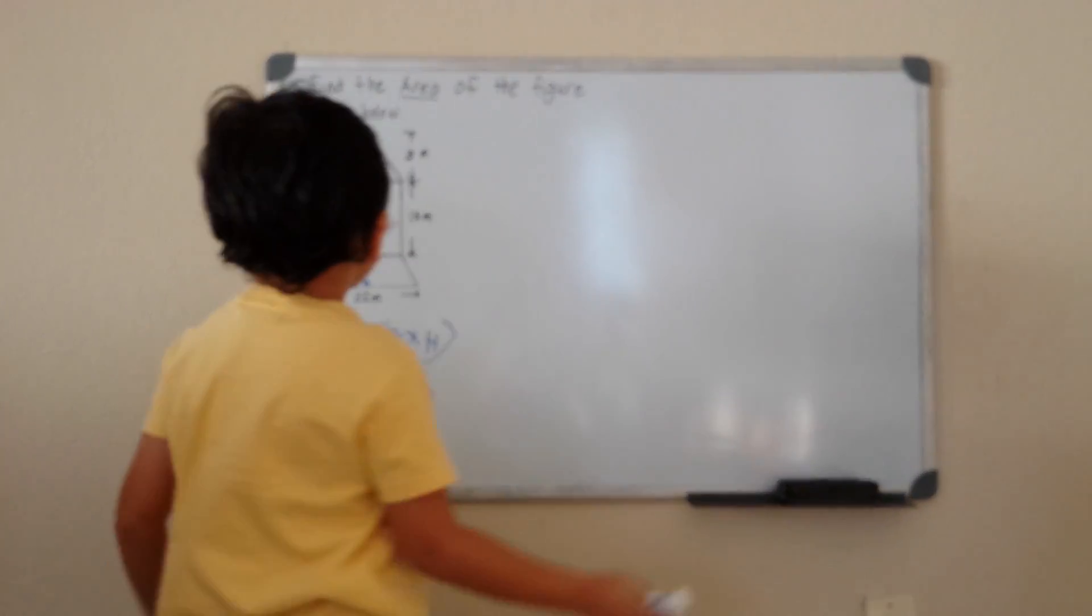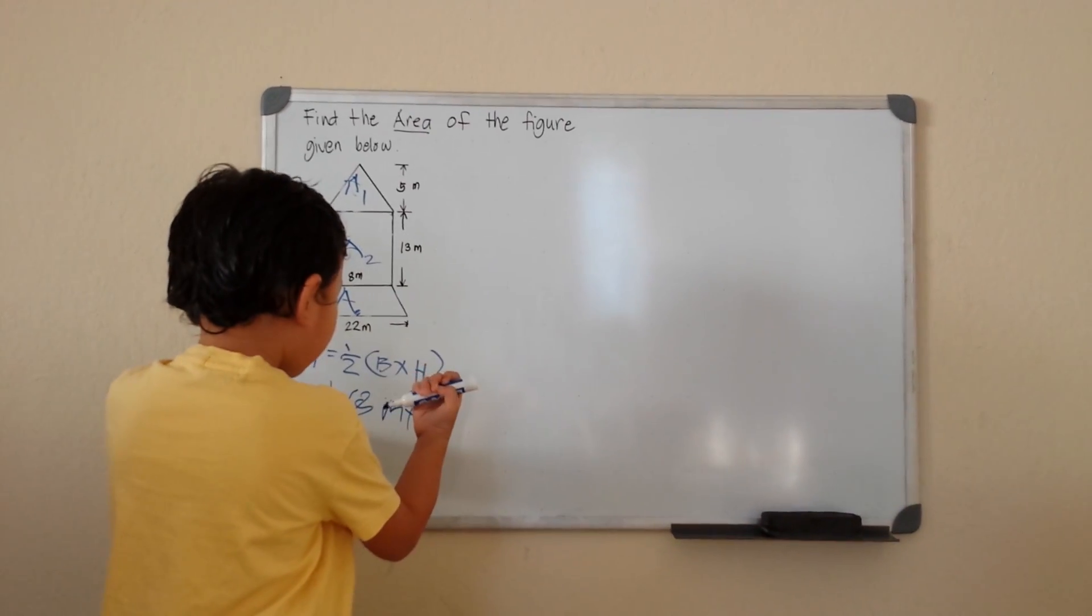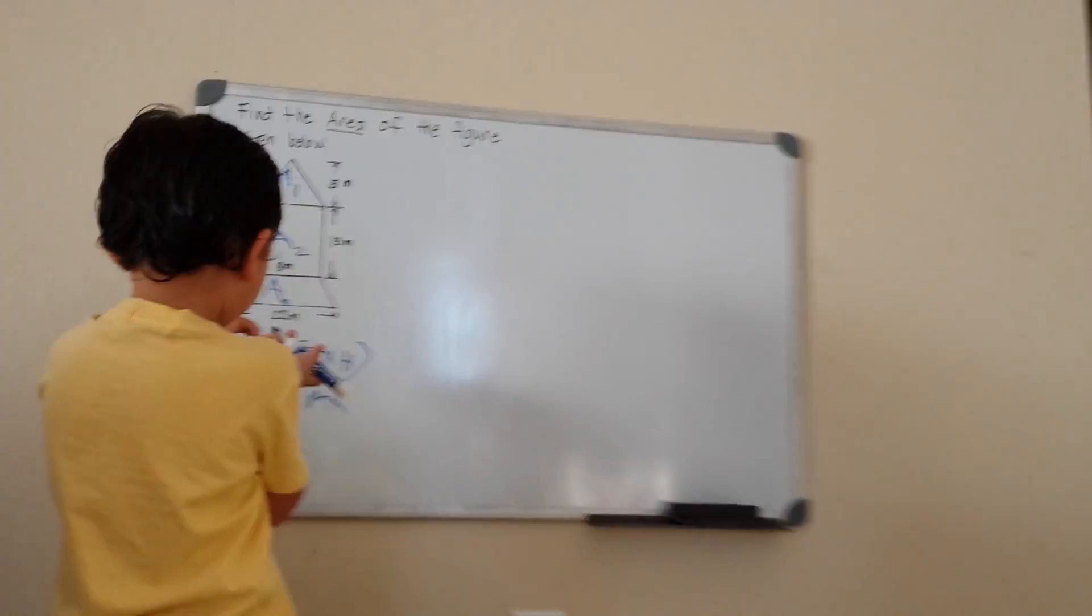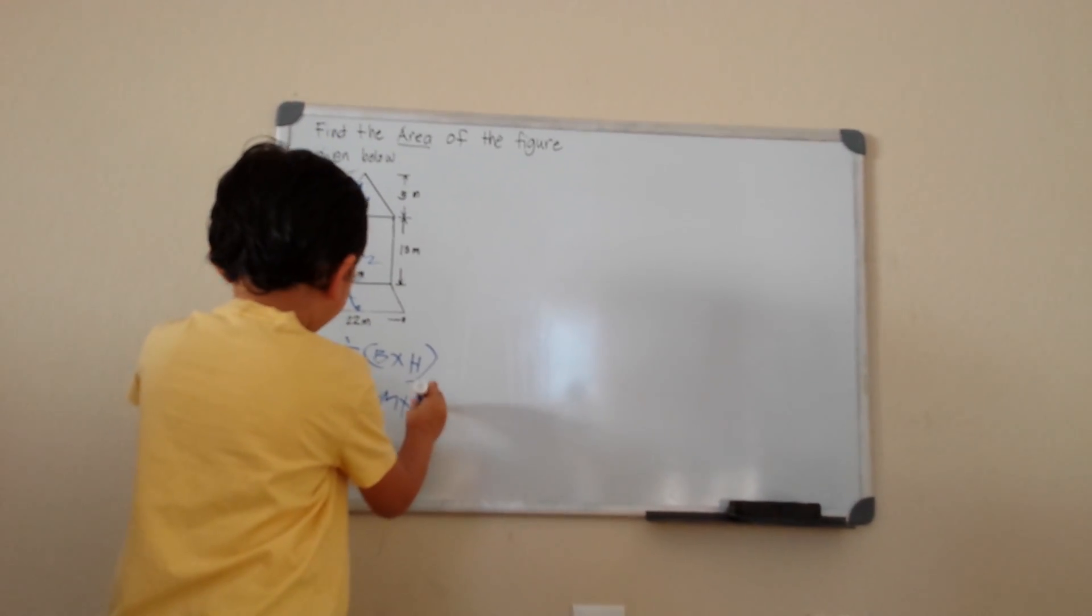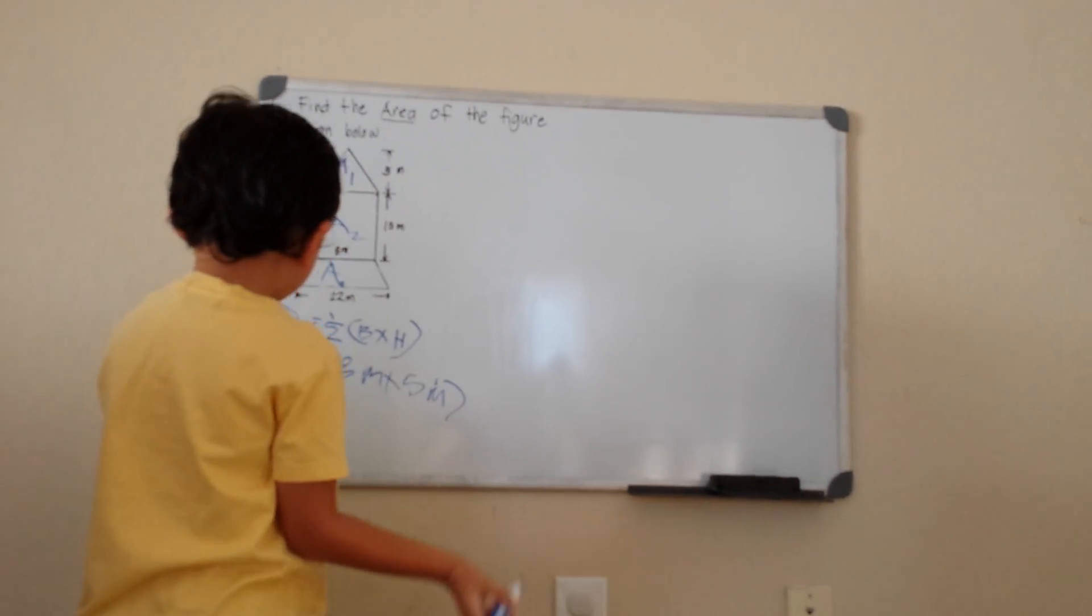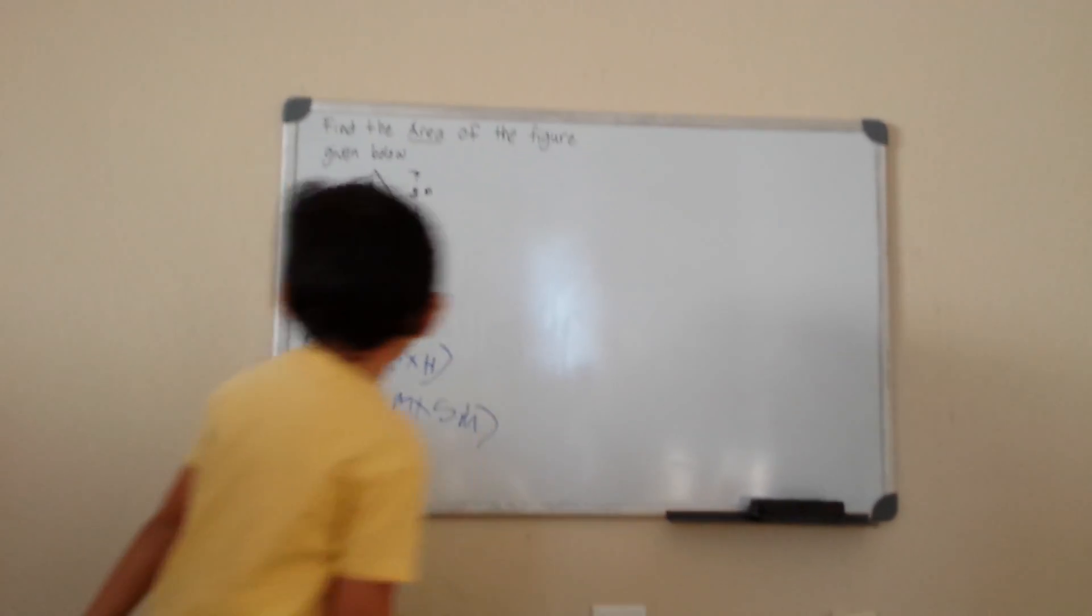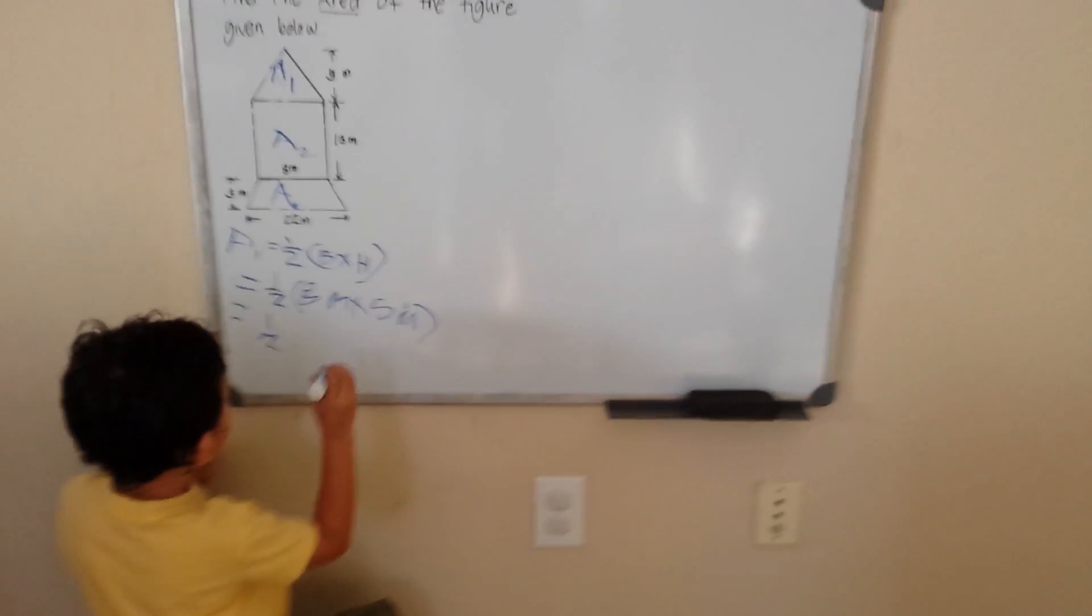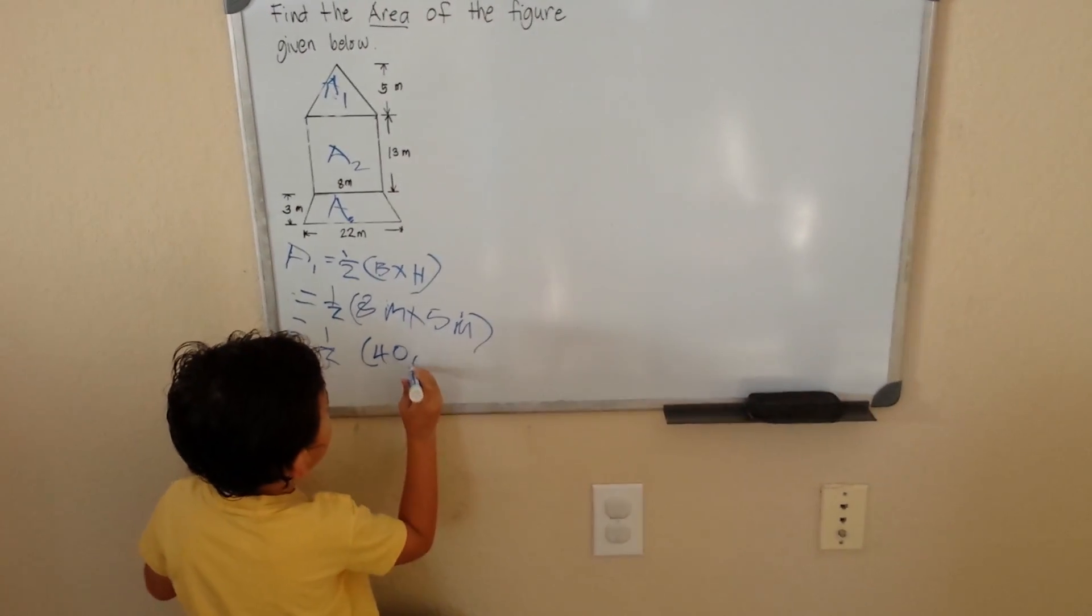It's inside the bracket because it's the area of the triangle. The height is 5 meters. Now I'm going to do one half. So 8 times 5 will just give me 40, and meter times meter is meter squared.